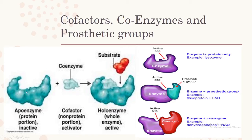If an enzyme needs a coenzyme, cofactor, or prosthetic group, it is currently inactive. When a coenzyme or cofactor is added, it acts as an activator and the substrate can now be catalyzed. The enzyme plus the apoenzyme together is known as the holoenzyme — the active and whole enzyme. Some enzymes, such as lysozymes, need no addition; others need prosthetic groups. For example, flavoprotein plus FAD, or dehydrogenases plus NAD, such as lactate dehydrogenase.